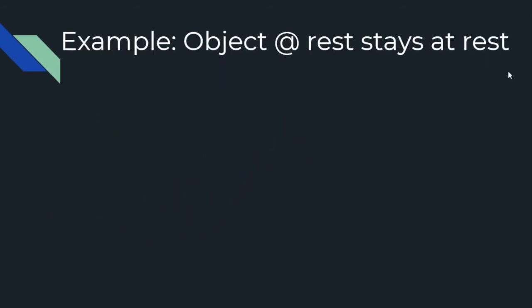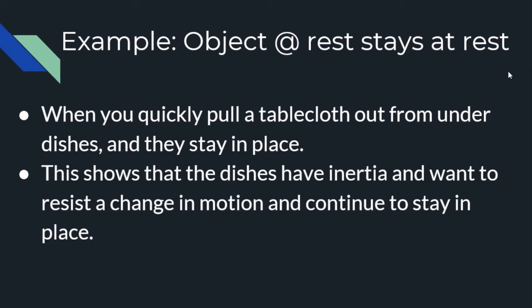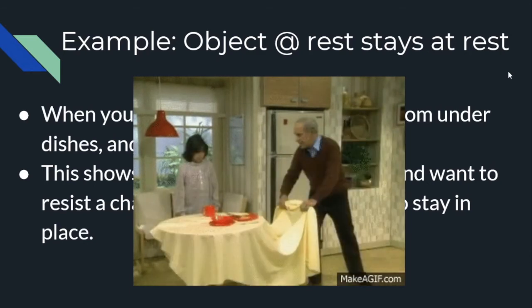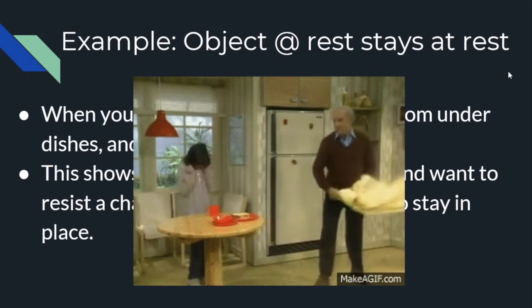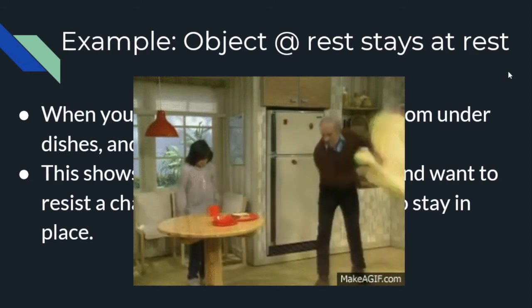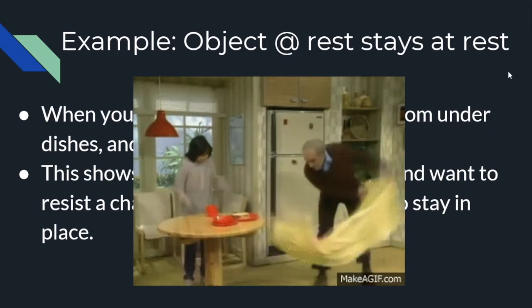Let's look at an example of objects that are at rest and staying at rest. Well, the prime example that we've all seen time and time again is when you quickly pull a tablecloth out from under the dishes and they just stay in place. This is showing that the dishes have inertia, just meaning that they have mass and they want to resist a change in motion and continue to stay in place. Here's a quick little gif that's demonstrating that. We see this guy pull out a tablecloth from underneath these dishes. The dishes were initially at rest, and because they have mass, they want to stay at rest.